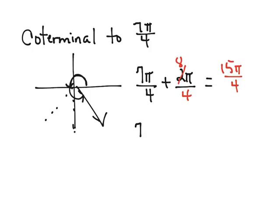And to find a negative angle that is coterminal, I can do 7 pi over 4 minus 2 pi. Again, I'm going to get a common denominator of 4, which would make my numerator be 8. And so 7 pi over 4 minus 8 pi over 4 would be equal to negative pi over 4.